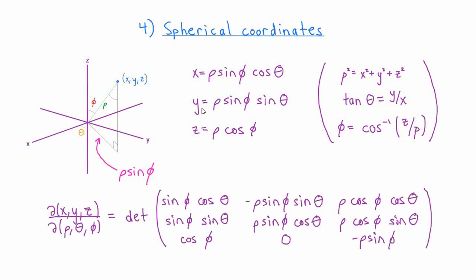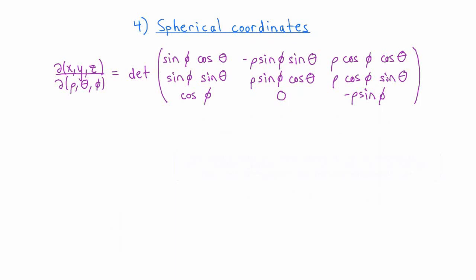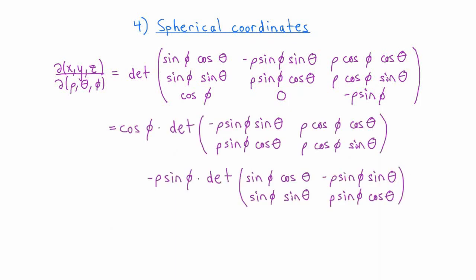This is a straightforward calculation. I've recorded the Jacobian matrix here. In case anyone out there likes taking determinants of big matrices, I'll leave the next part of the calculation for you. When you take the determinant of this matrix, you end up getting minus rho squared times sine of phi. One thing to remember is that when we make a change of variables we use the absolute value of the Jacobian determinant, so that minus sign is not really important.